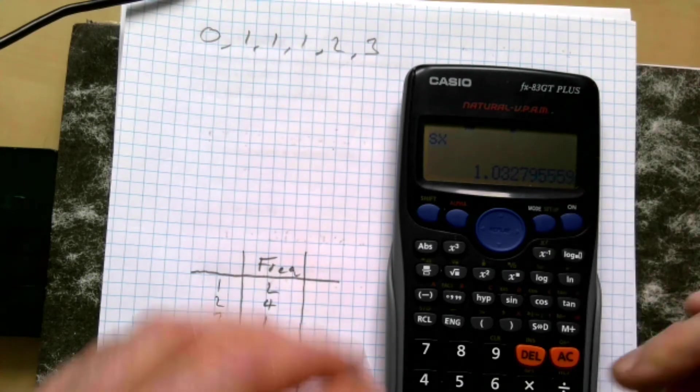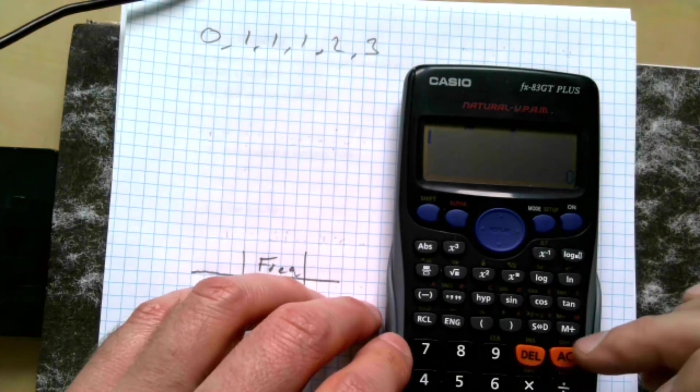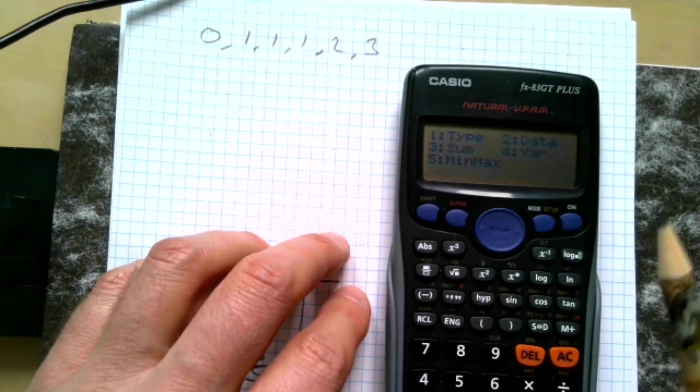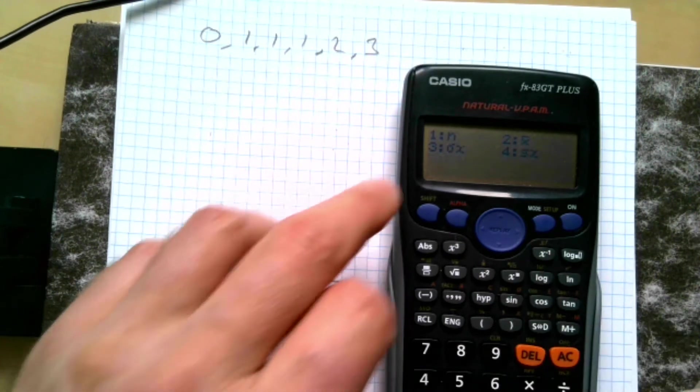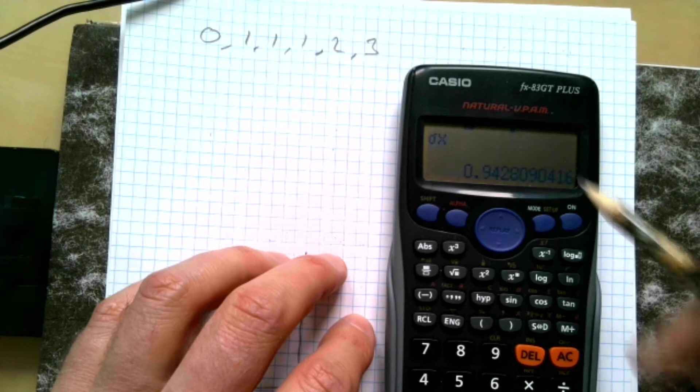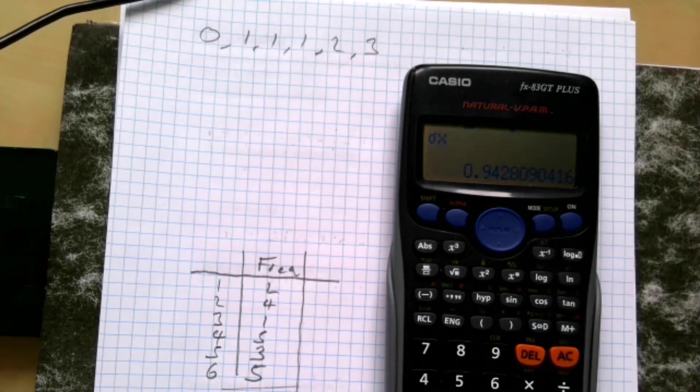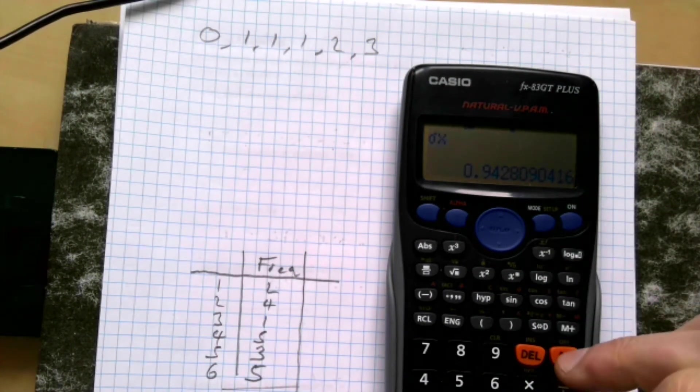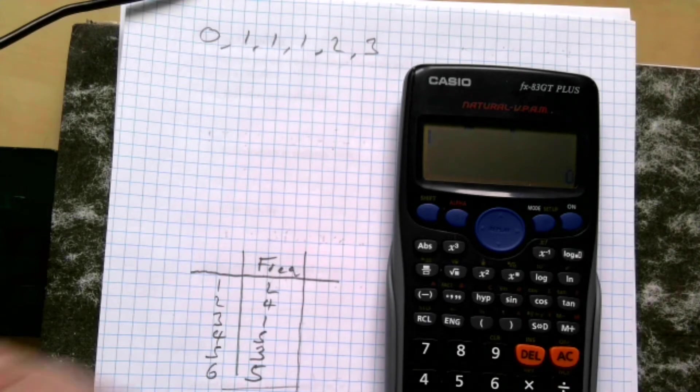If I cancel out again, shift one four number three, 0.942 then, which is my standard deviation for that. Okay, so that's generally how you use it.